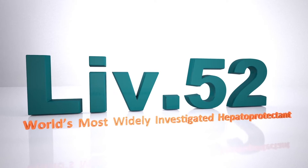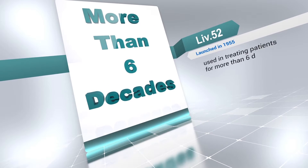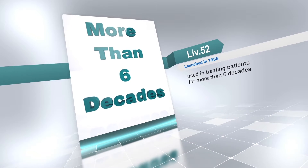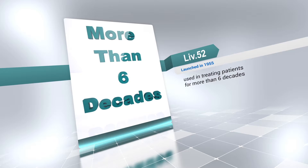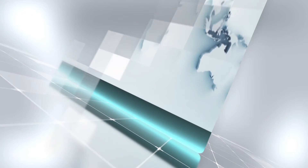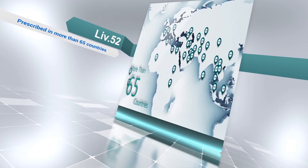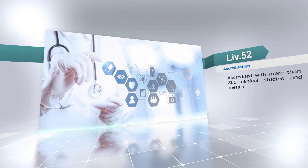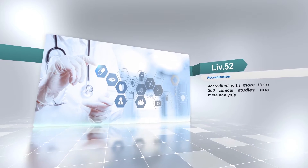LIV-52, the world's most widely investigated hepatoprotectant. LIV-52 was launched in 1955 and has been used in treating patients for more than six decades. It is registered as a pharmaceutical product in more than 65 countries and is accredited with more than 300 clinical trials published in reputed international journals.